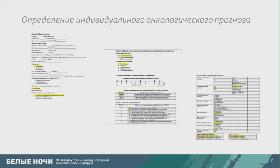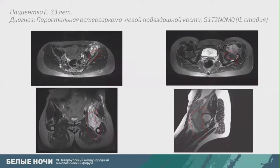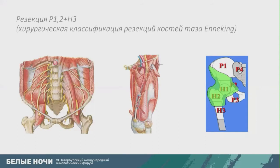In case of favorable prognosis, we should think about functional surgery with potential organ-sparing options. Here we see a patient 33 years of age with parosteal osteosarcoma of her left leg bone at G1-2-0-1b stage. We see the tumor spread and the classic studies — the X-rays, CT, and MRI scan.